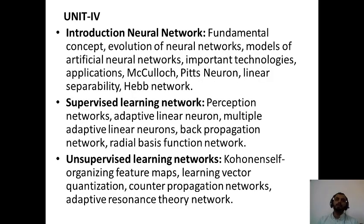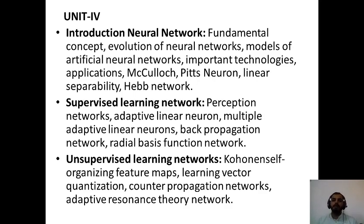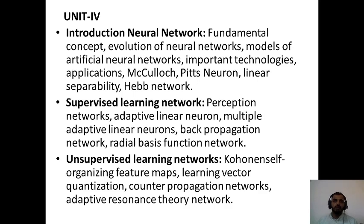Let's see what is there in this particular unit or chapter. This chapter is all about the introduction to neural networks, also known as artificial neural networks, in which we'll be creating a network in which the system can take decisions based on the probabilities and possibilities of the condition associated. This network is actually designed with reference to our neurons, in which we take decisions based on conditions and the learning of past experiences.